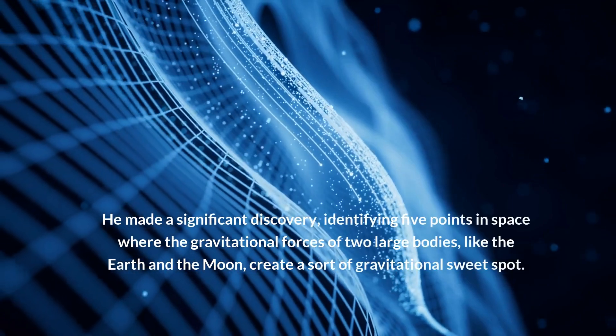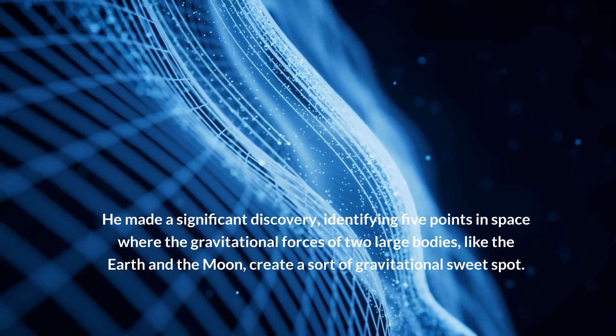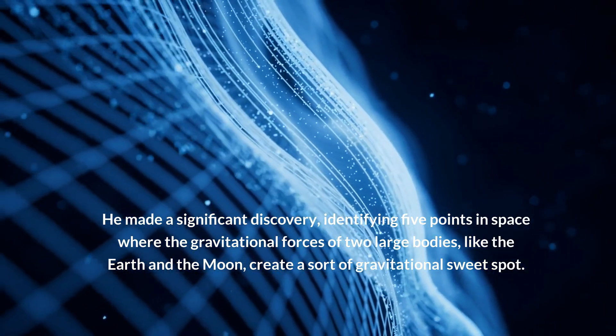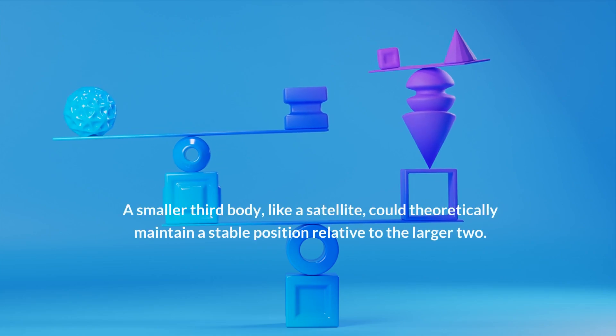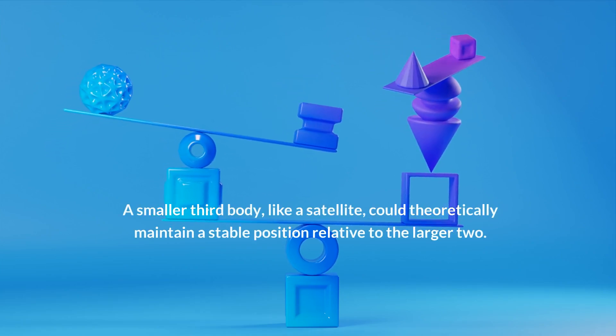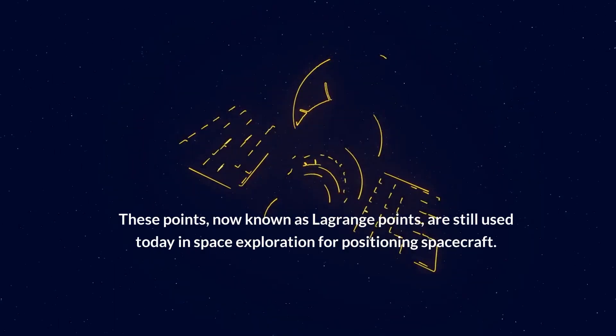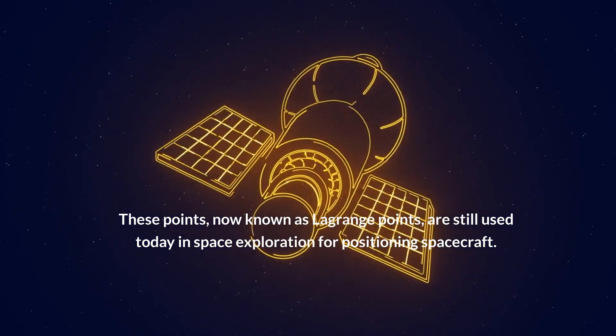He made a significant discovery, identifying five points in space where the gravitational forces of two large bodies, like the Earth and the Moon, create a sort of gravitational sweet spot. A smaller third body, like a satellite, could theoretically maintain a stable position relative to the larger two. These points, now known as Lagrange points, are still used today in space exploration for positioning spacecraft.